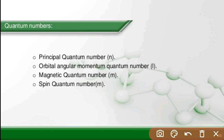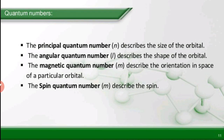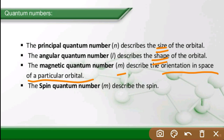There are four quantum numbers: principal quantum number N, orbital angular quantum number L, magnetic quantum number M, and spin quantum number S. N describes the size of the orbital, L describes the shape, M is the orientation in space, and S is the spin quantum number.